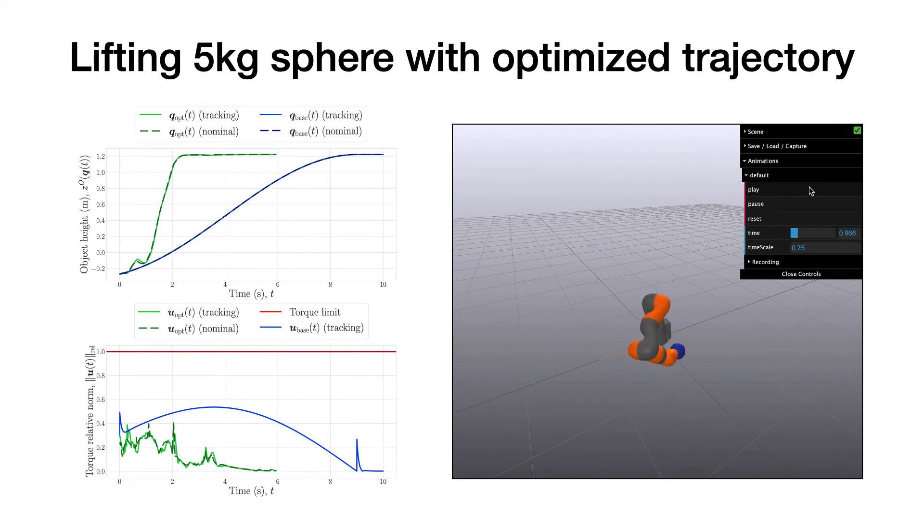This video clip shows the robot arm lifting 5 kg weight using the optimized trajectory. The optimization method finds a nontrivial trajectory which utilizes a swing-up motion early on to build momentum. Compared to the baseline trajectory, the optimized solution needs shorter time to lift the weight.